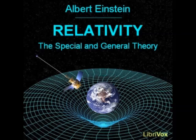This arrangement does not even need to be of such a kind that we must regard x sub 1, x sub 2, and x sub 3 as space coordinates and x sub 4 as a time coordinate. The reader may think that such a description of the world would be quite inadequate. What does it mean to assign to an event the particular coordinates x sub 1, x sub 2, x sub 3, and x sub 4, if in themselves these coordinates have no significance? More careful consideration shows, however, that this anxiety is unfounded.